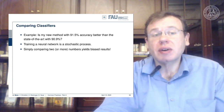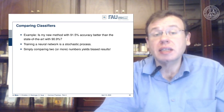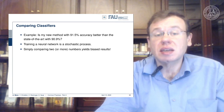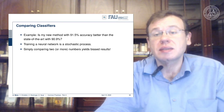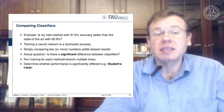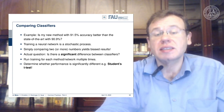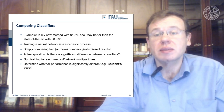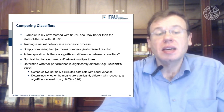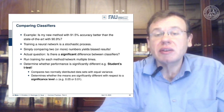When comparing different classifiers, the question is: is my new method with 91.5% accuracy better than the state of the art at 90.9%? Since training is a stochastic process, just comparing those two numbers yields biased results. The actual question is whether there is a significant difference between the classifiers. This means you need to run training for each method multiple times and then use, for example, a t-test to see whether the distribution of results is significantly different. The t-test compares two normally distributed datasets with equal variance and determines whether the means are significantly different with respect to a significance level alpha — commonly 5% or 1% in the literature.